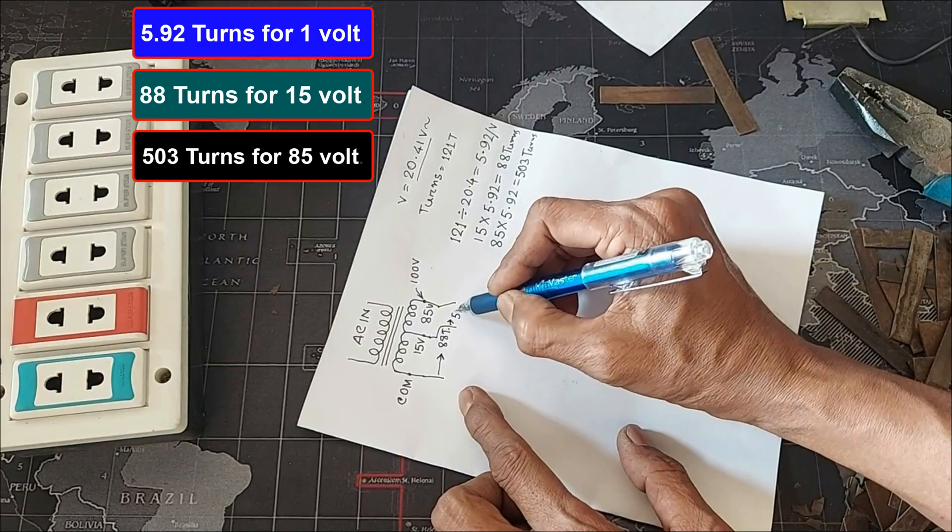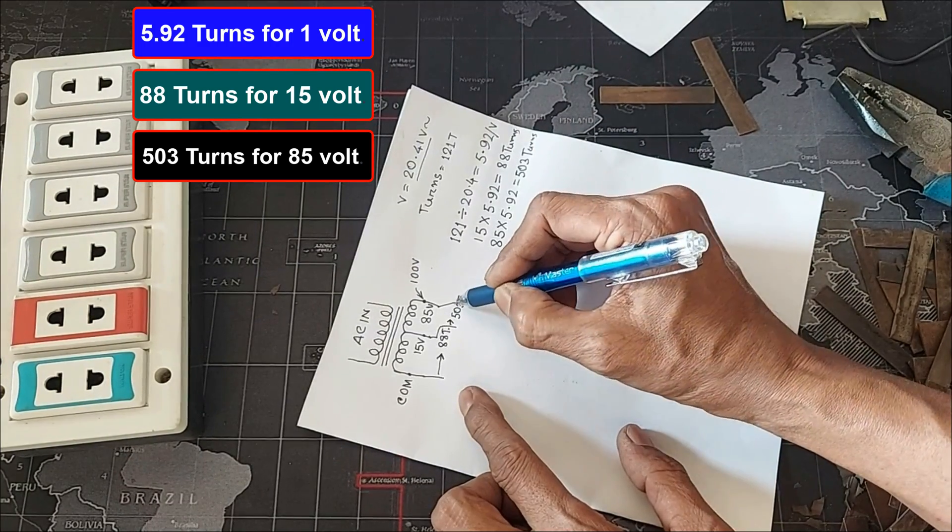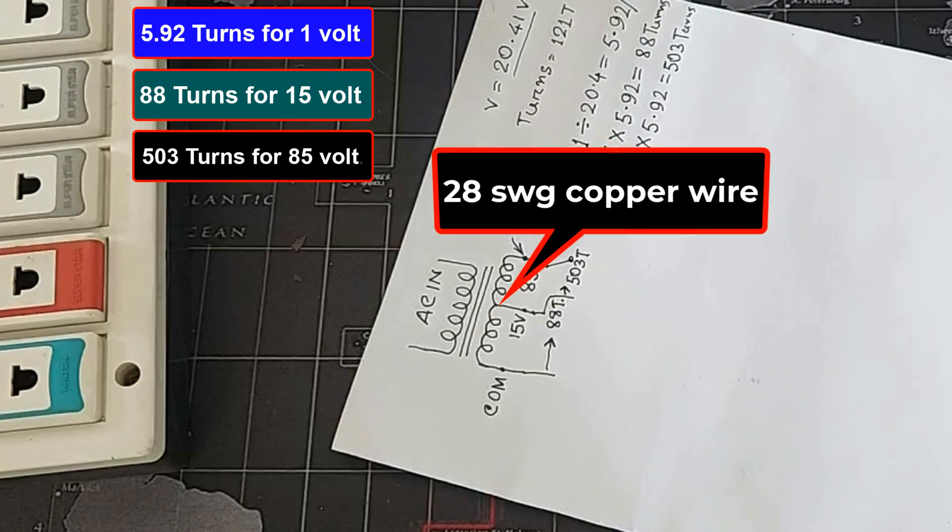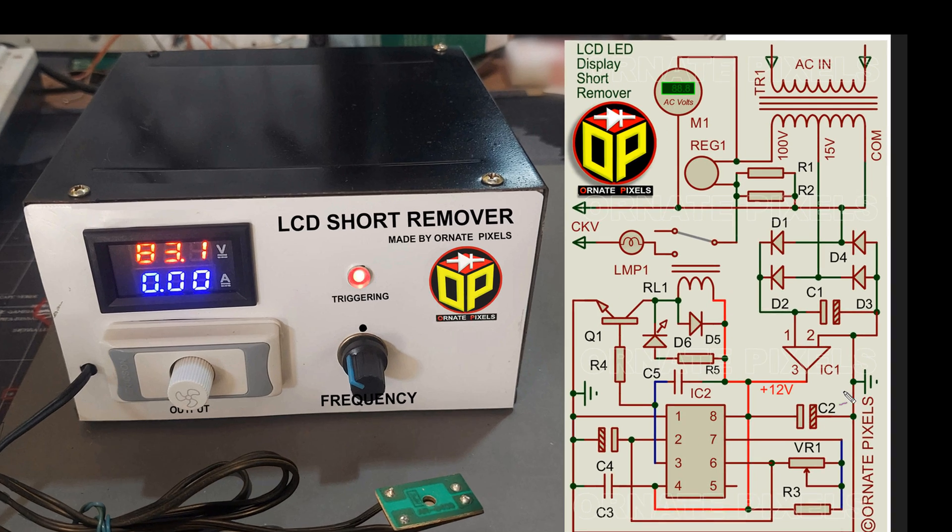Therefore, 503 turns of winding are made on this coil. 100 grams of 28 gauge wire is required to make this coil.